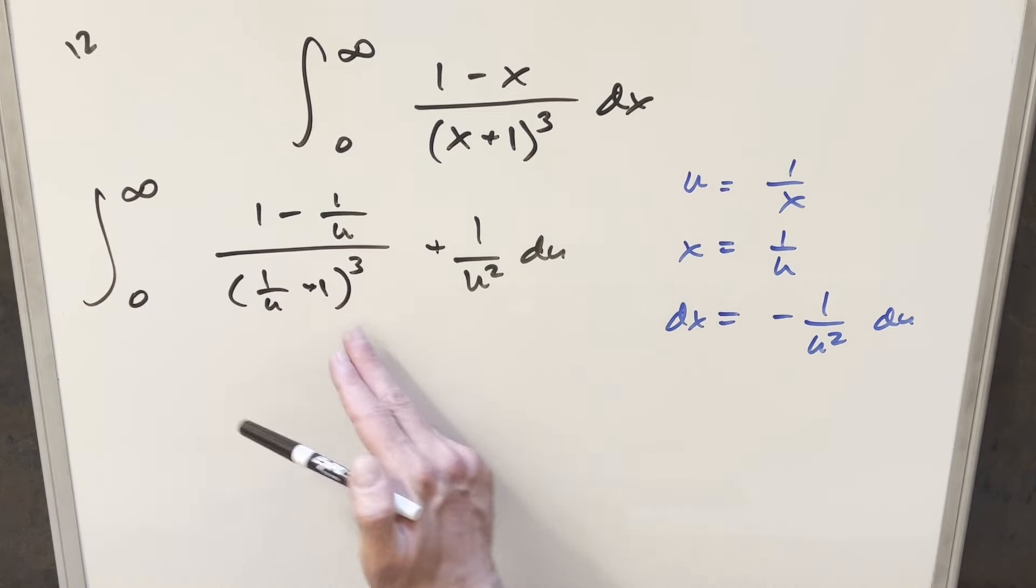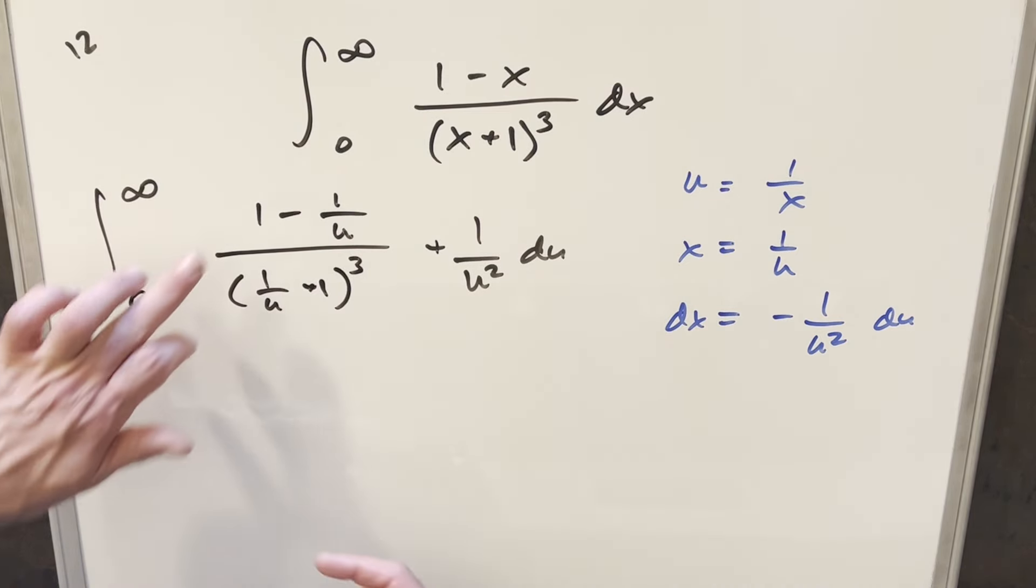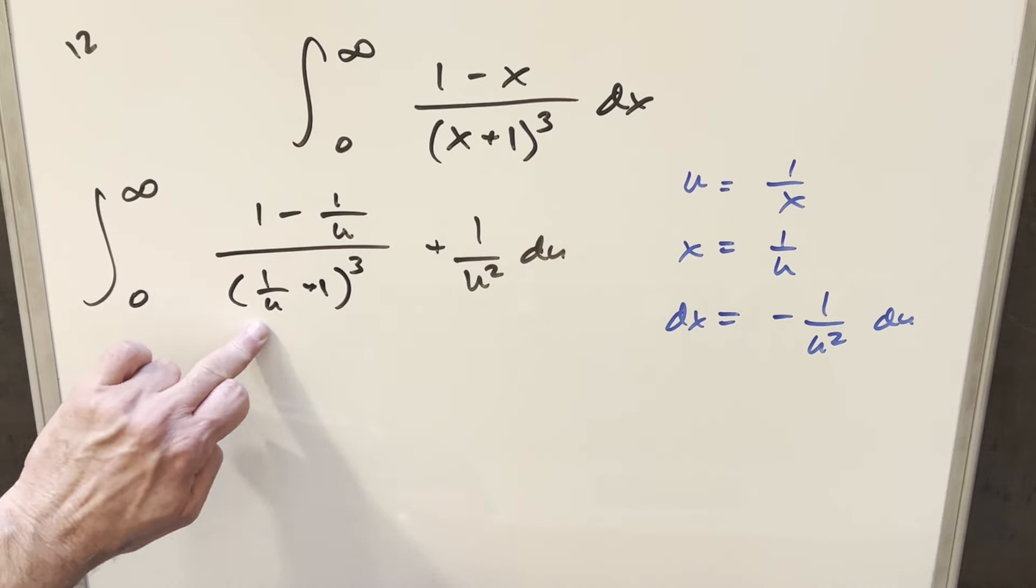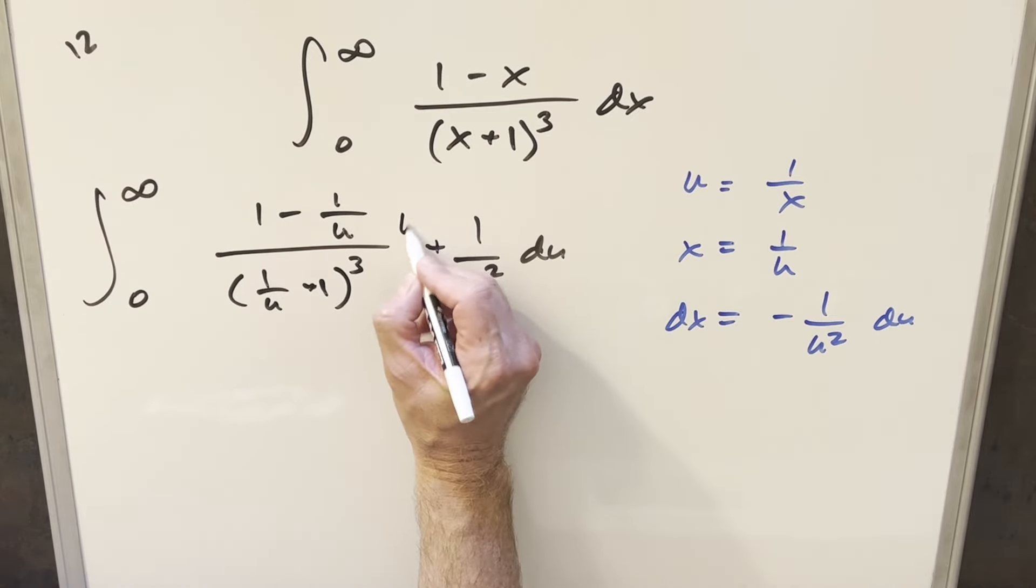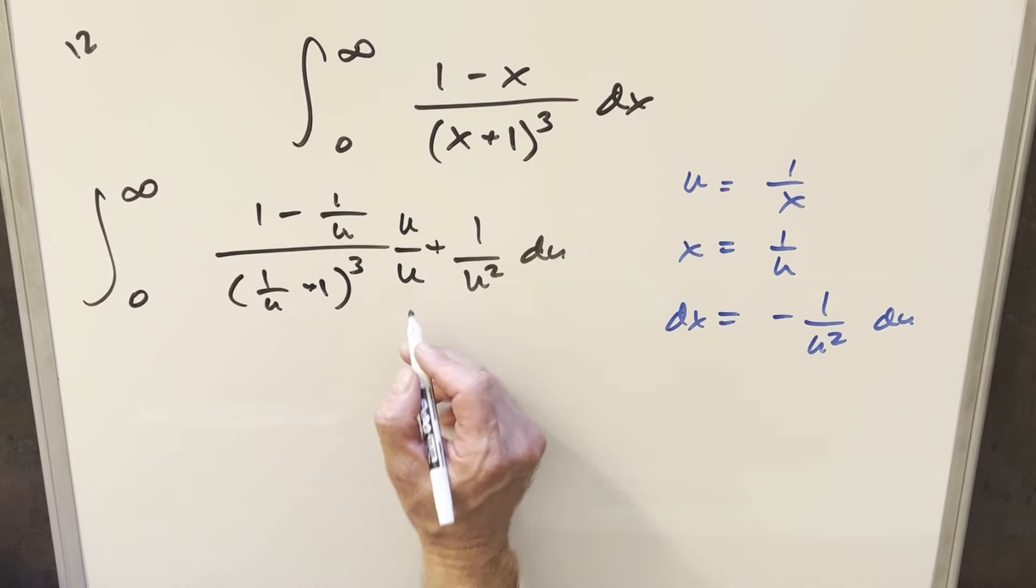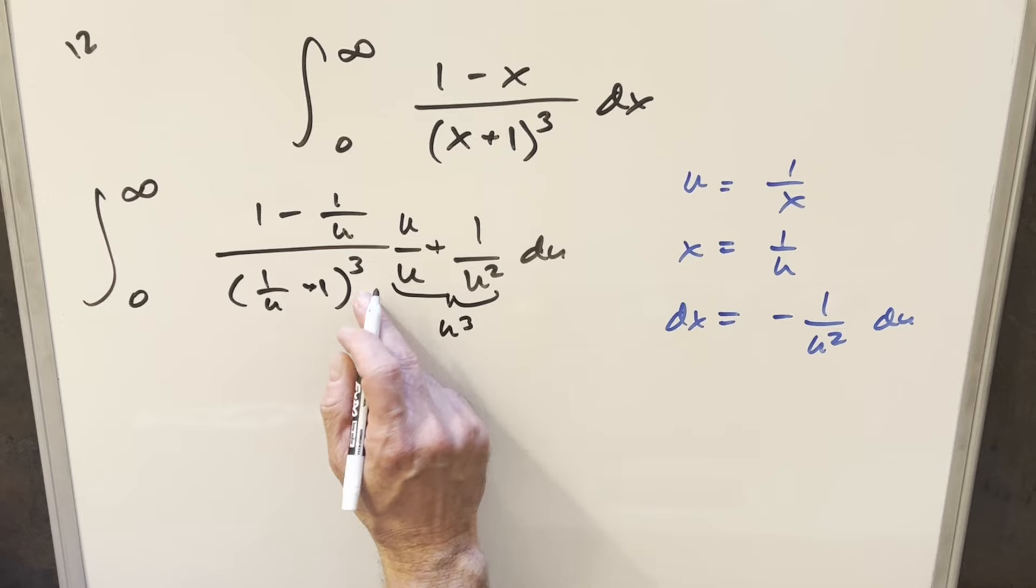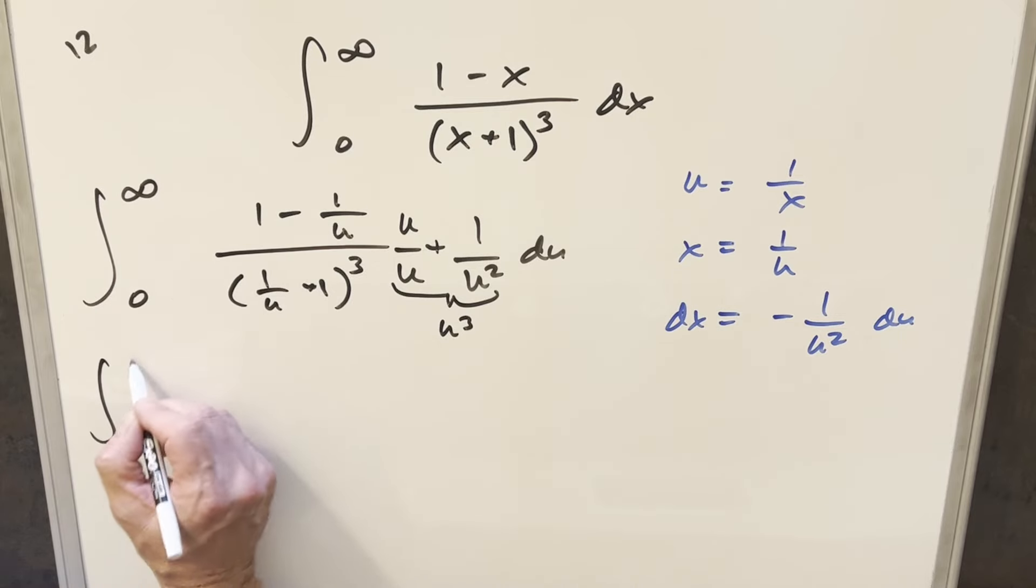And then instead of just multiplying this in right away, what I want to do is something to kind of clean up. I don't want anything in the denominator like this 1 over u term. So in order to fix this in the numerator, I'll multiply by u over u here. Then what's going to happen is this is going to become a u cubed. That's going to work nice because this term is cubed.